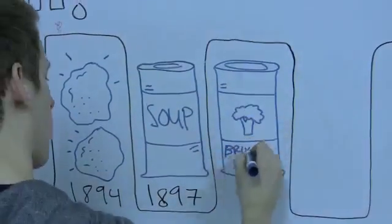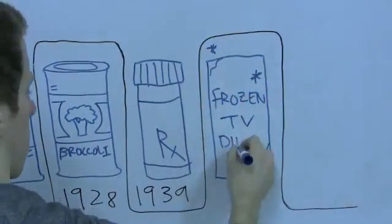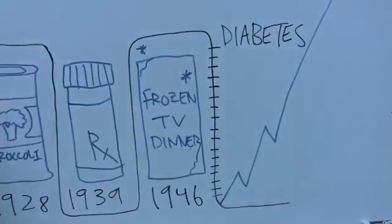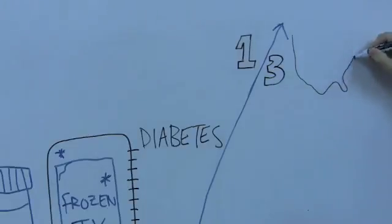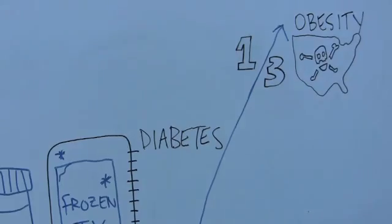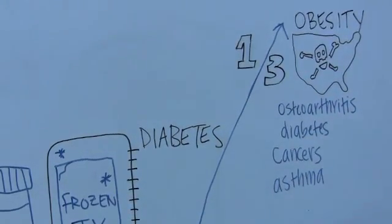Canned vegetables, amphetamine diet pills, and GMOs such as TV dinners and cake mixes were introduced in the 20th century. Also in the 20th century, diabetes rates in the United States increased by six-fold. Today, one out of three adults in the United States is considered obese. Obesity is one of the top preventable causes of death in our country, and causes other major health concerns such as osteoarthritis, diabetes, cancers, and asthma.